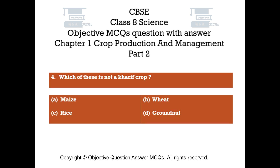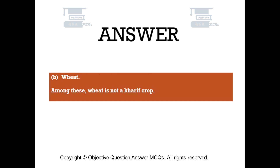Question number 4. Which of these is not a kharif crop? Option A: Maize. Option B: Wheat. Option C: Rice. Option D: Ground nut. The right answer is Option B, Wheat. Among these, wheat is not a kharif crop.